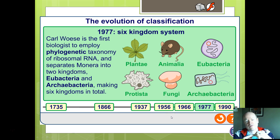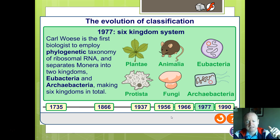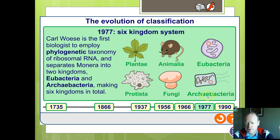Carl Woese is the one we have to thank for our current thinking. Initially, we went to a six-kingdom system by using phylogenetics — looking at ribosomal RNA and differences in those. We had plants, animals, prokaryotes, and fungi, and then divided bacteria into what we call eubacteria and archaebacteria, or sometimes the ancient bacteria. So there were six kingdoms of equal standing.